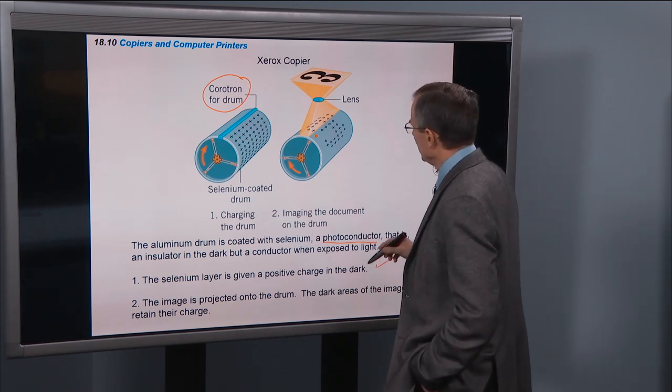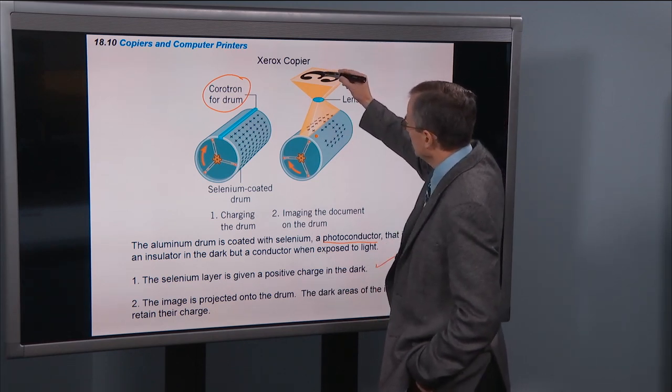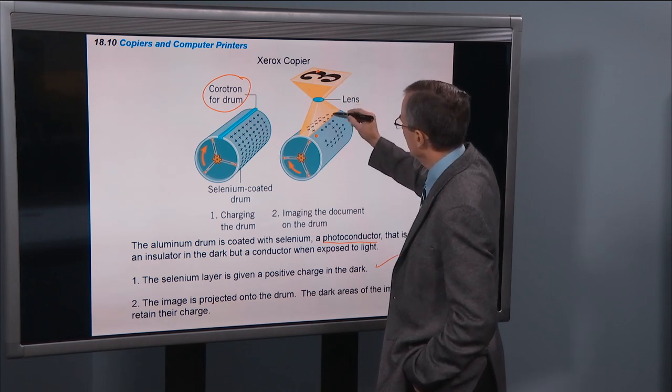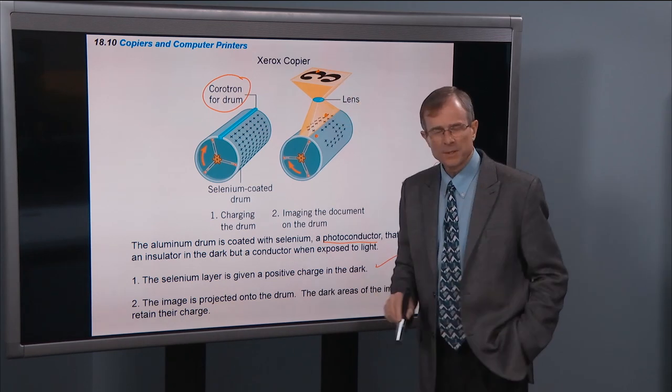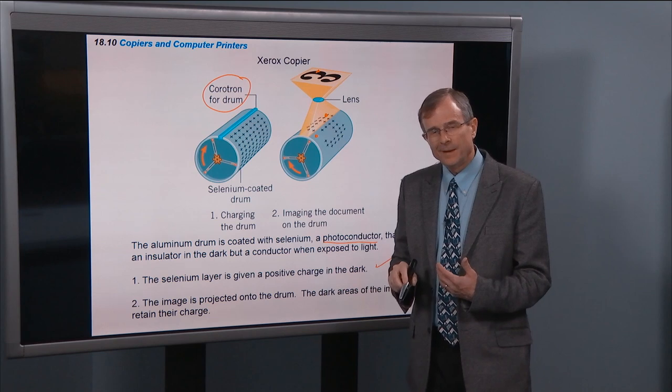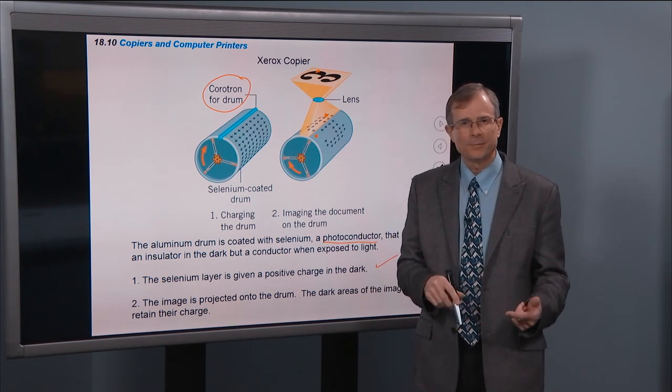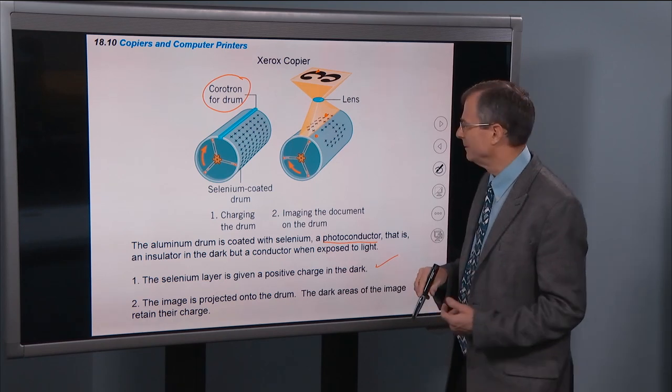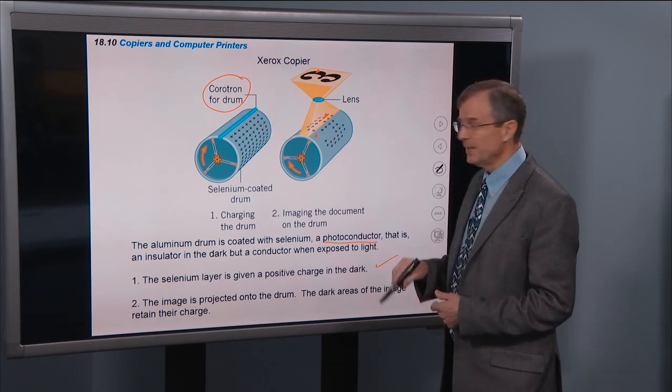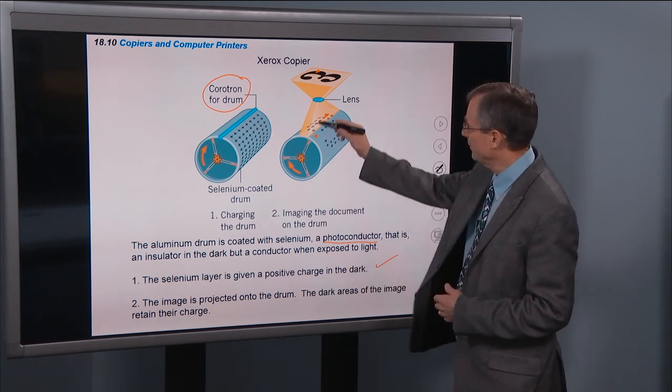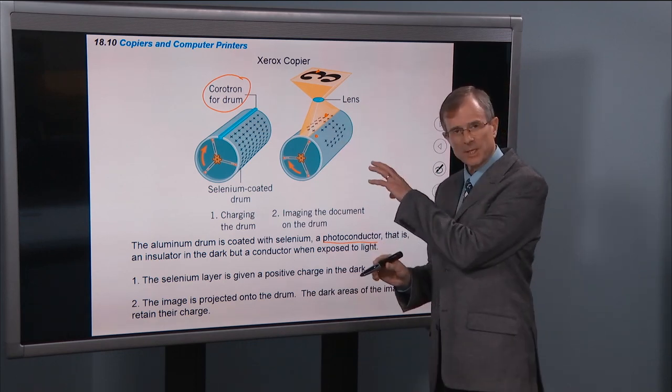And so, but everywhere that there's a dark place, so this point here on the three, where there's that spot, there's no light that shines there in the image projected from the thing you're taking the picture of. And so the charge remains there. So you have basically a three etched on that selenium surface.